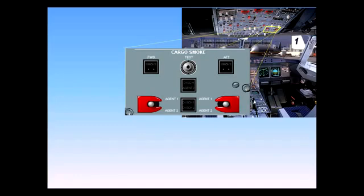On the overhead panel, there is a cargo smoke panel with the indications on cargo smoke. The system consists of the discharge nozzles and two fire bottles. The system is controlled through this panel.